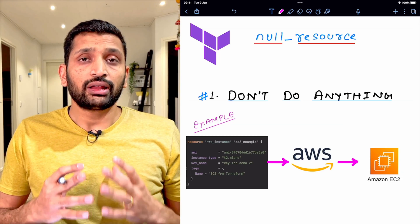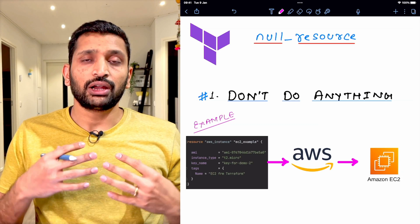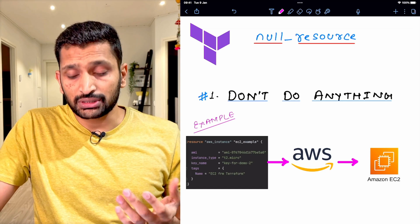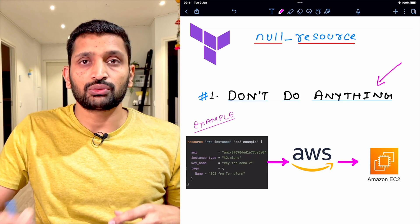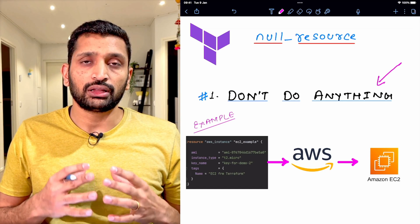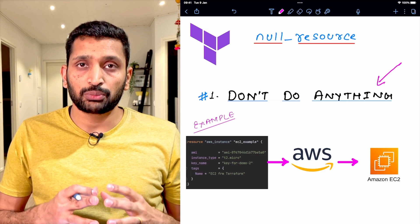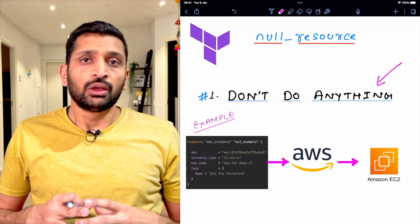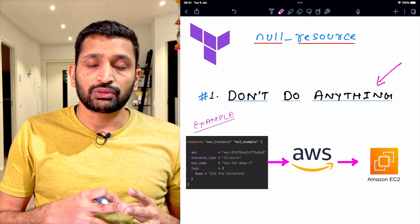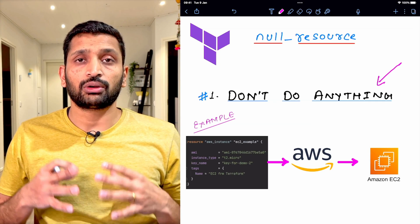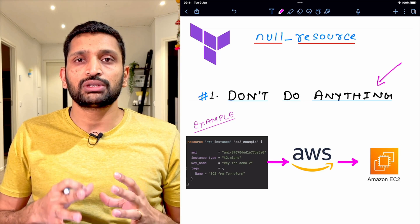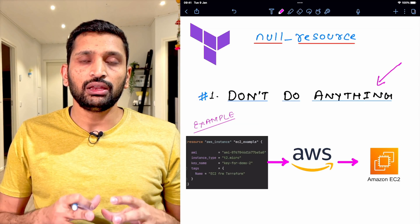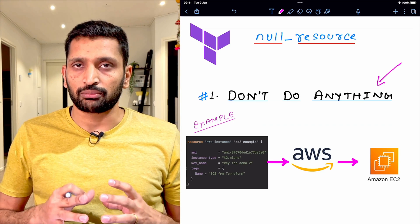Before we take a concrete example, let's understand what null resource means. The first thing null resource says is: don't do anything. That means you don't have to provision or start any resource on a cloud environment. Whether you are working on AWS, Google Cloud, or Azure, if you are using a null resource then it will not set up any resource onto your cloud environment.